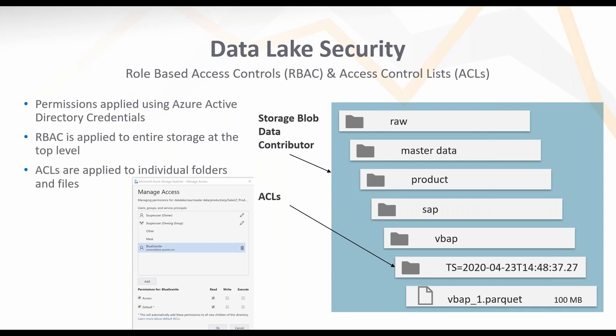The other way to apply permissions is through ACLs, which are applied at individual folders and files. You can create an ACL permission — either an access or default permission — and apply read, write, and execute rights to a folder and all its children and files at different layers within the data lake. This allows you to give people access to certain types of data but not others.